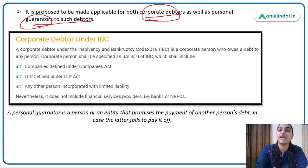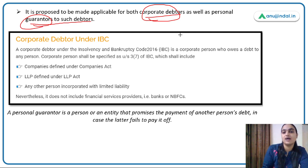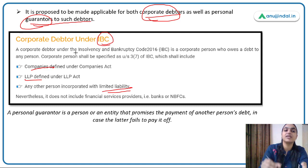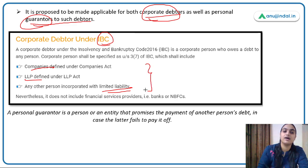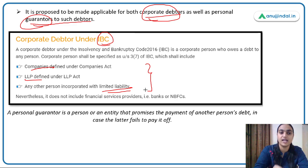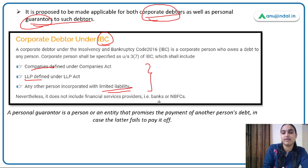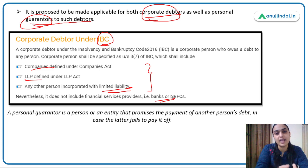By corporate debtor, we mean entities that owe a certain debt — companies under the Companies Act, LLPs, and any other person who owes debt. However, the IBC has kept banks and NBFCs outside the ambit of corporate debtor; financial service providers like banks and NBFCs are not included.